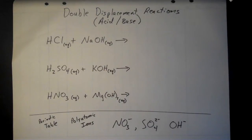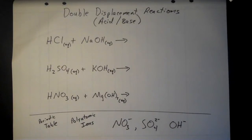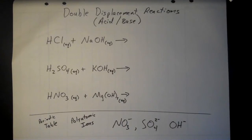In this video, we're going to be looking at double displacement reactions, this time with acid-base reactions. We just looked at the precipitation reaction one, and these acid-base reactions work very much the same way — we're going to bring one of each cation over and swap the anions — with one major difference that you'll see as we go through these.